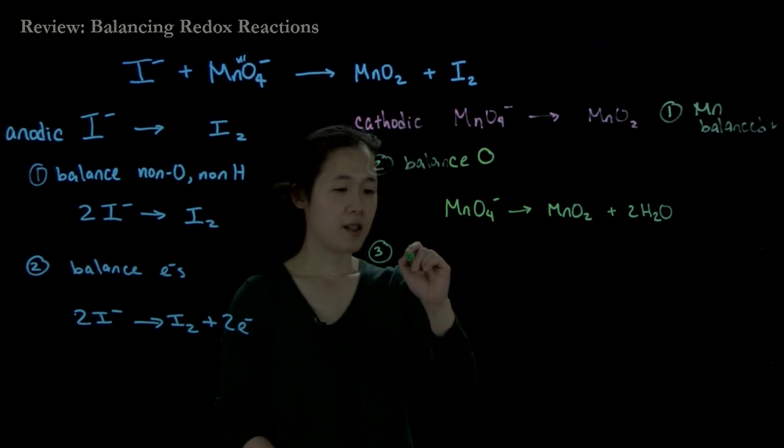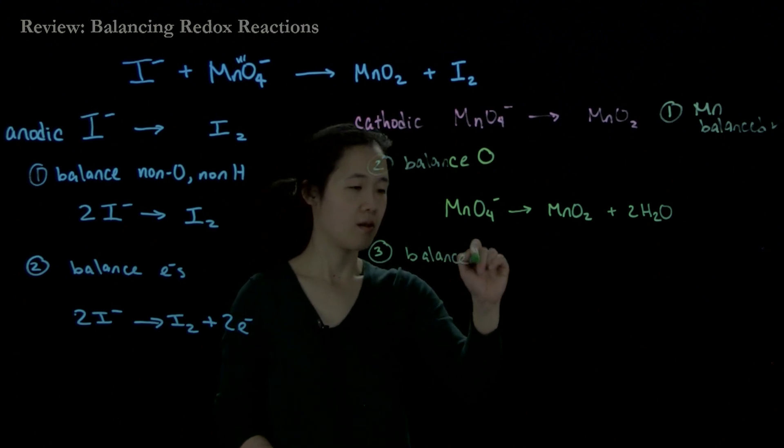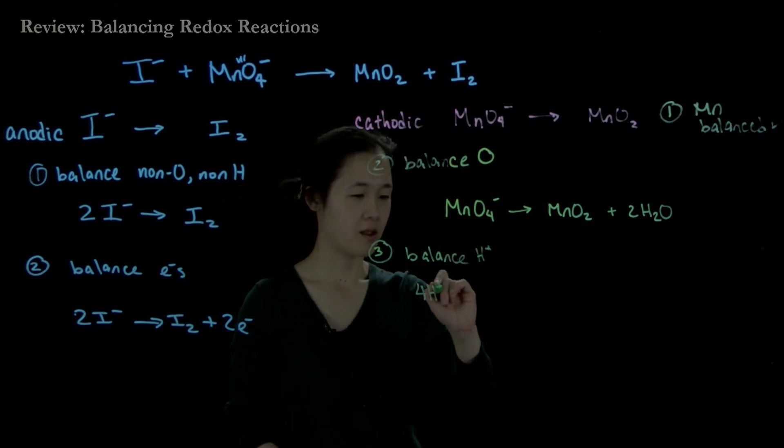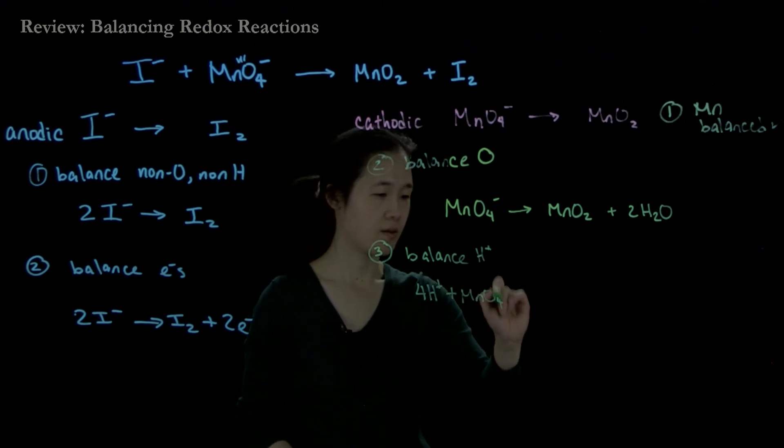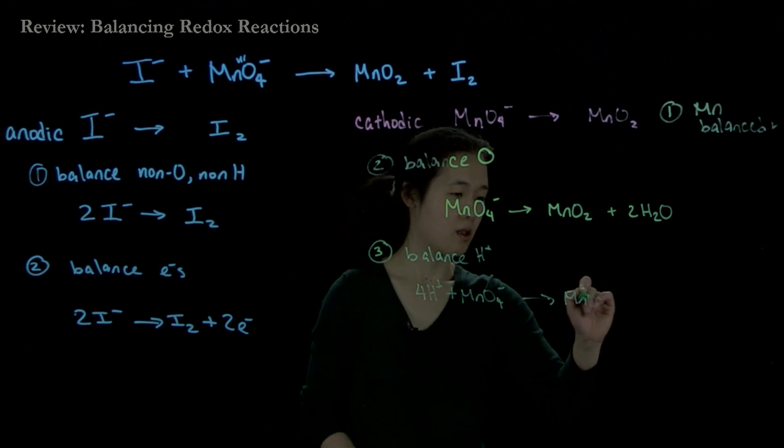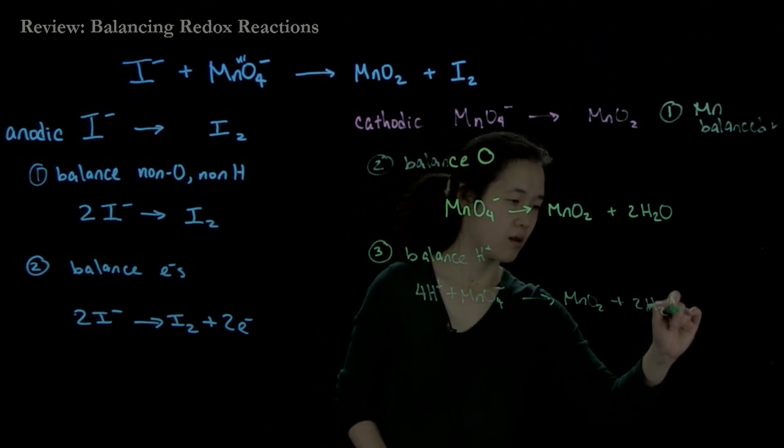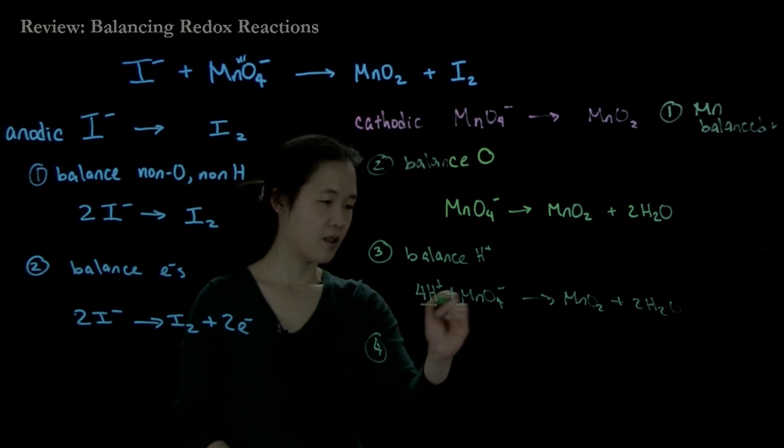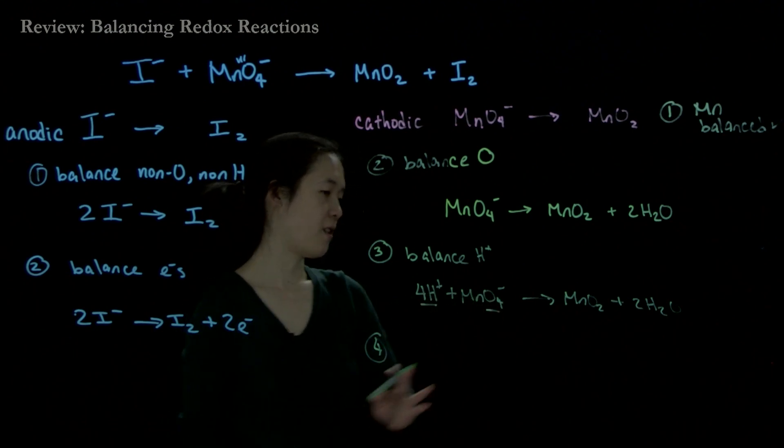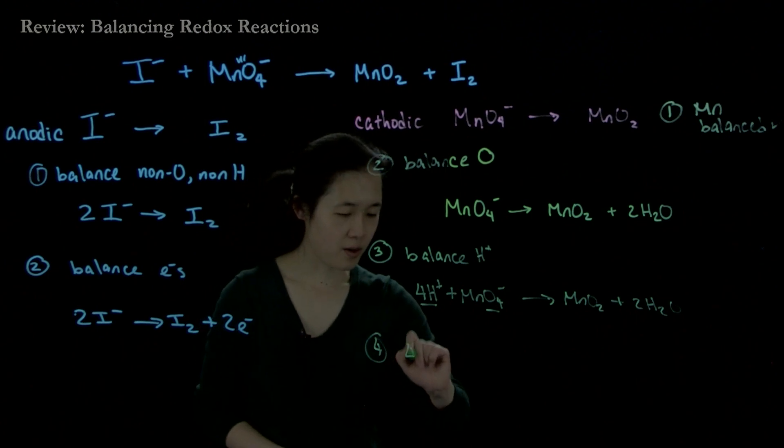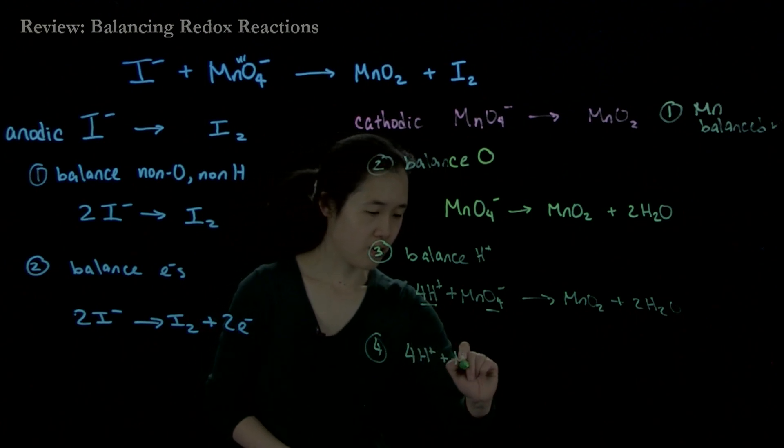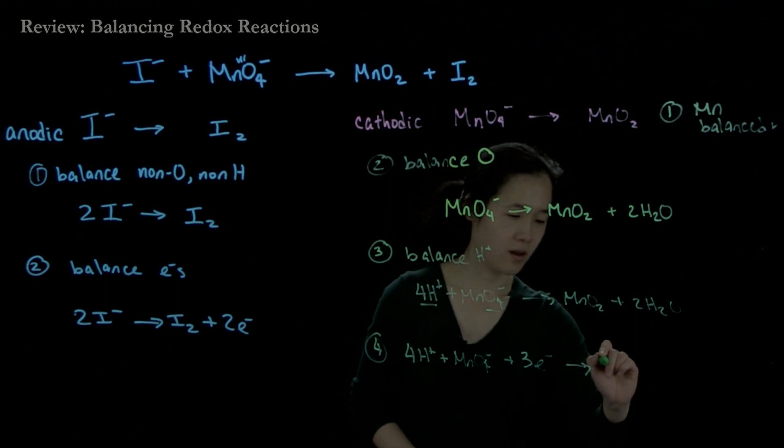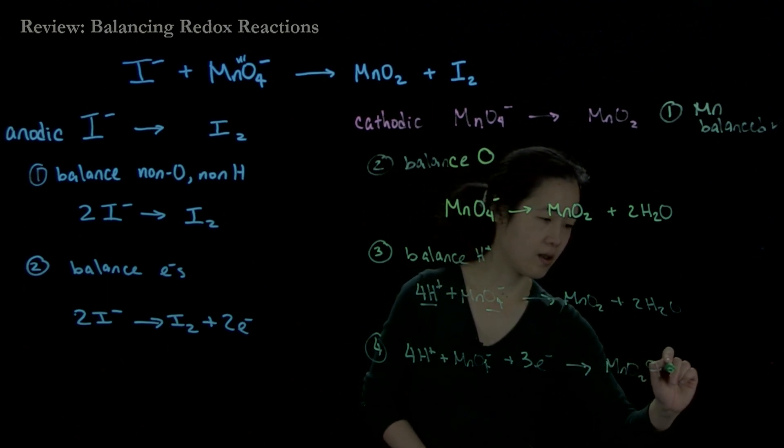Step three: we'll balance protons. Here we have four protons from the water, here we have zero, so we add four protons to the left side. Step four: we'll balance our charges. Here we have four protons plus one minus charge, so overall this is 3+. On the right is neutral. So we must add electrons: 4H+ plus MnO4- plus 3e- goes to MnO2 plus 2H2O.